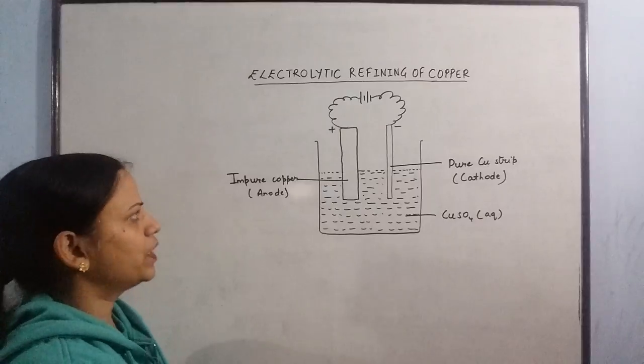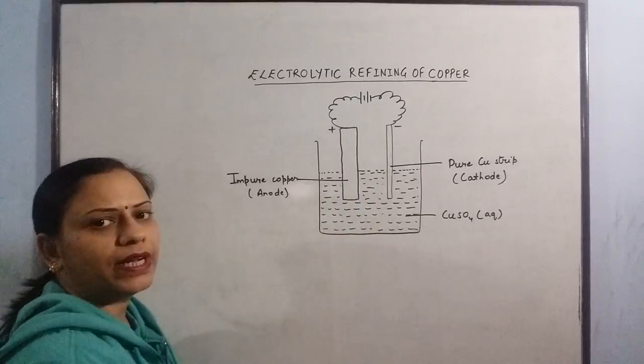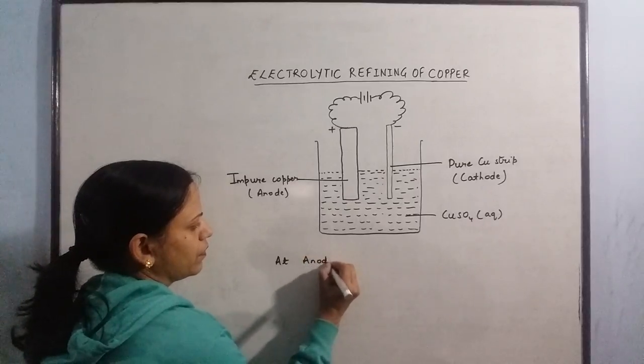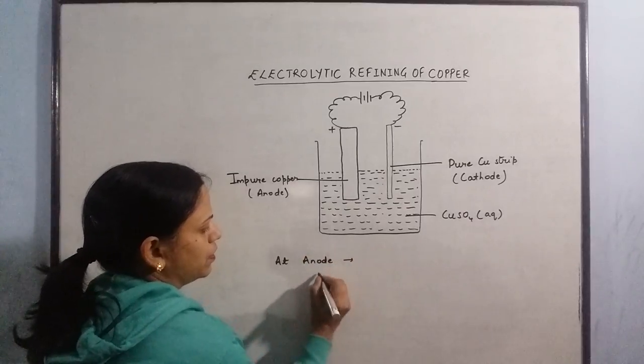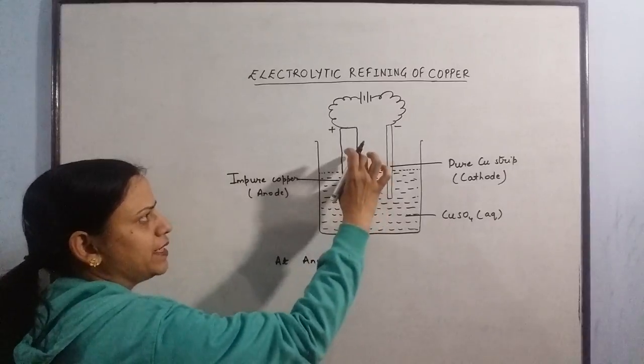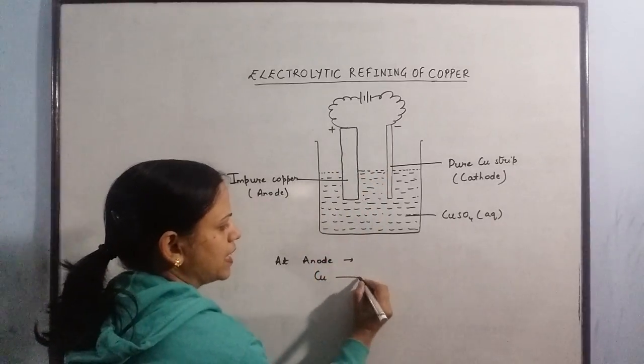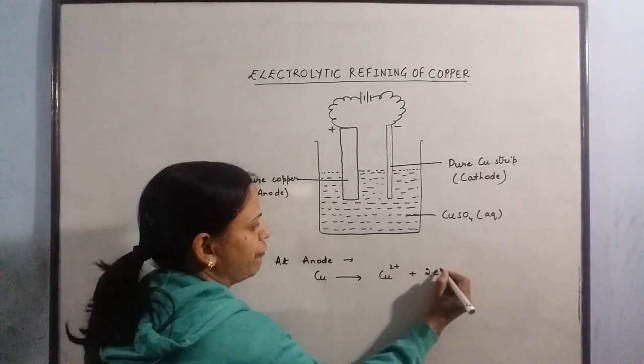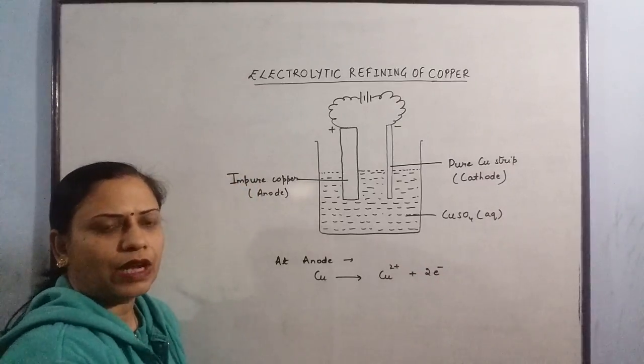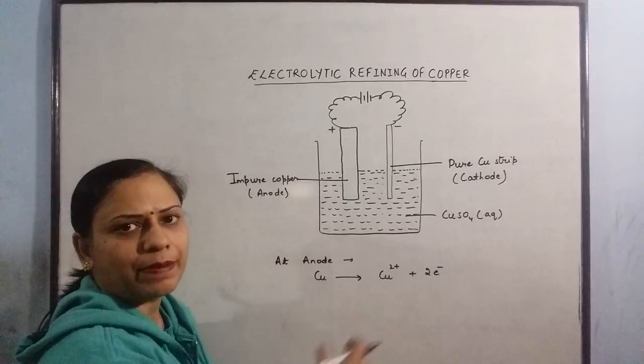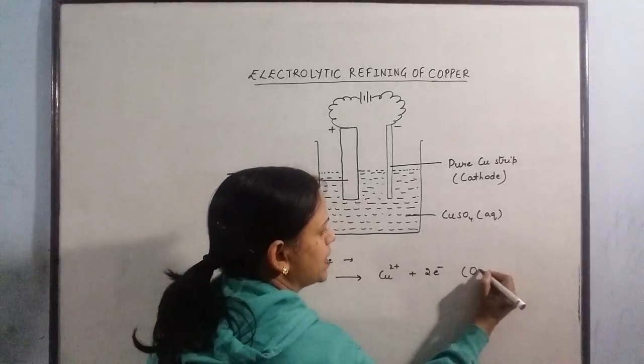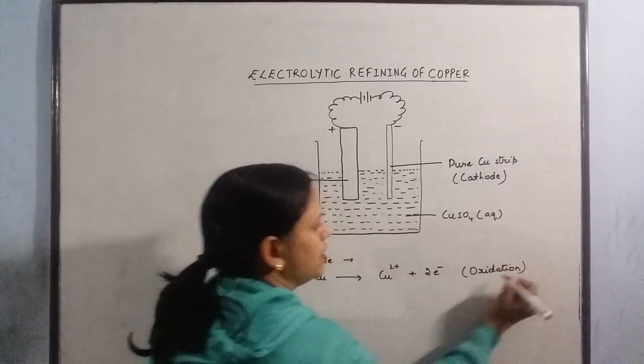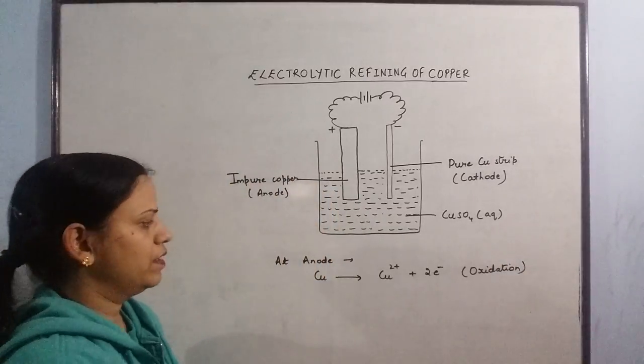Once the current is switched on, what happens is that the anode starts dissolving. At anode, the copper that is present in this rod starts dissociating into copper ions and producing free electrons. In this process, since electrons are being given out, this is the oxidation process. Loss of electrons means oxidation.